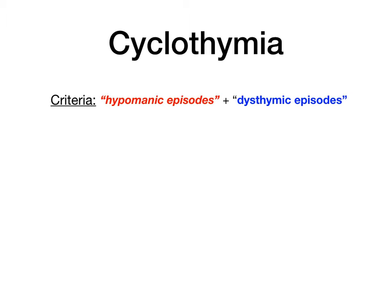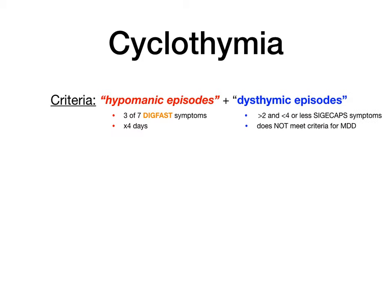The criteria for cyclothymia: the patient has hypomanic episodes — three of seven DIG-FAST symptoms for at least four days — alternating with dysthymic episodes. Dysthymic episodes have greater than two but no more than four SIG-E-CAPS symptoms, and do not meet criteria for major depressive disorder. Think of cyclothymia as baby mania alternating with baby depression. They never meet criteria for a full manic episode, never meet criteria for a major depressive episode, but they're still a little hypomanic and a little depressed at times.